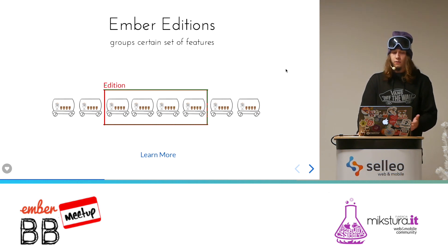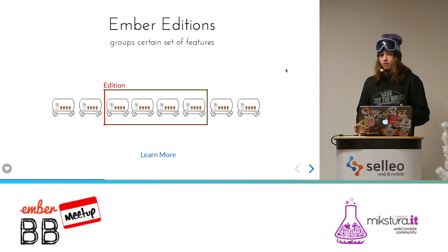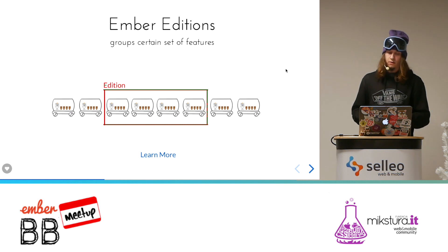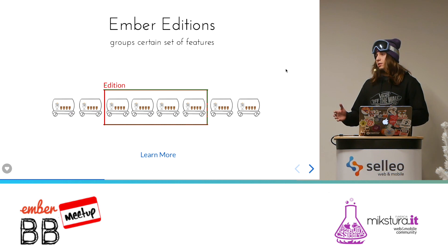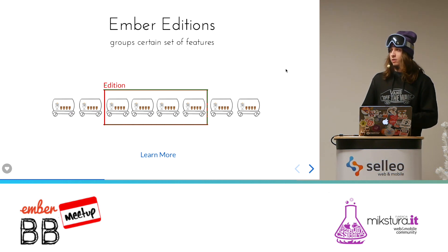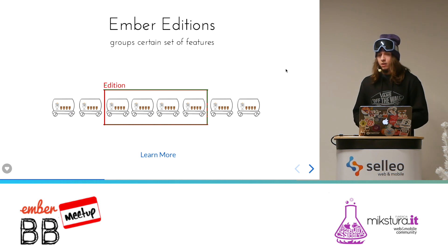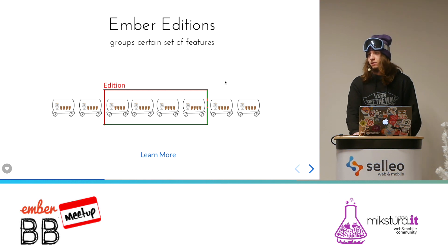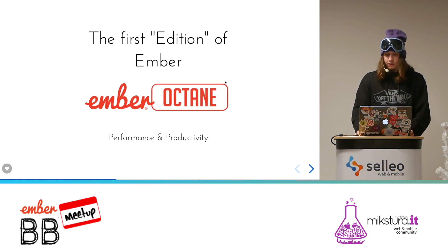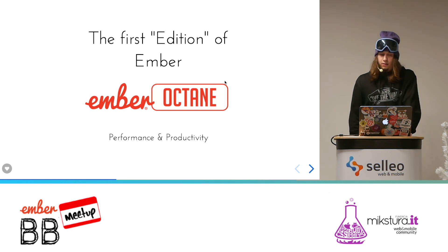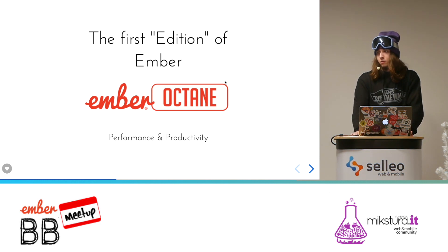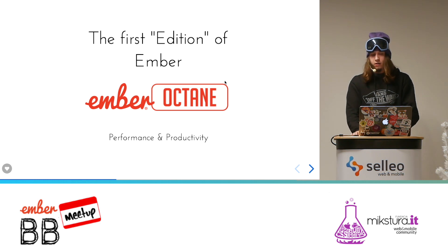For this reason, someone introduced the concept of editions. An edition is a group of features connected together in a logical way — a few releases worth of completed, stable work. If you want to read more about editions, there is a link to the RFC where everything is described. The first edition of Ember is called Ember Octane, and it is focused on performance and productivity. Every new feature fits somewhere within that terminology.